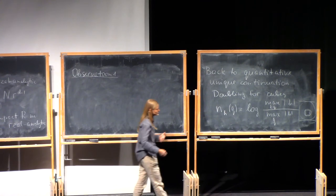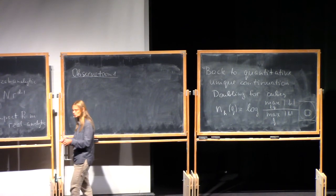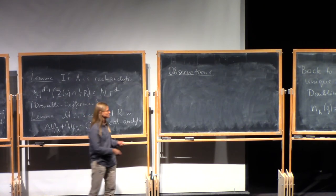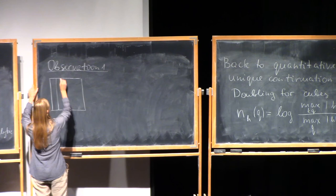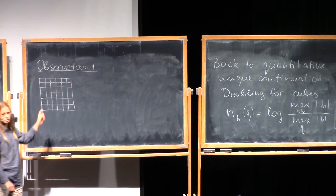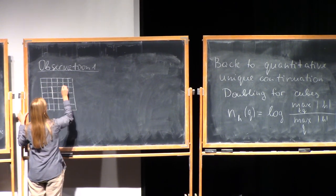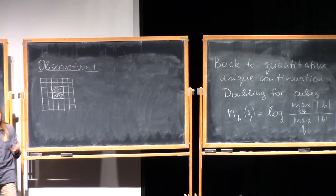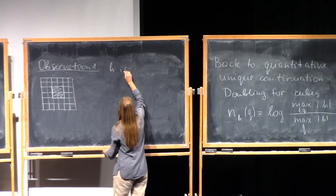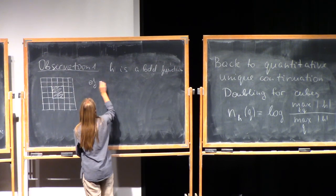The first observation, true for any function, is that if you have a function in a cube and suppose that for each small sub-cube the doubling is large, then on the big scale the doubling of the whole cube is very large. Let me try to formulate it carefully. I have a bounded function h on cube Q, and Q is partitioned into many small cubes.